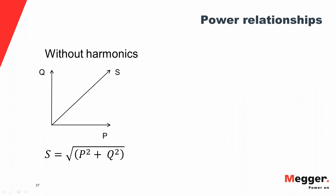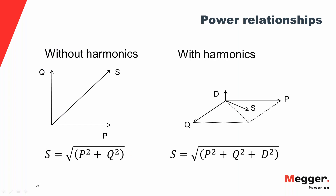In a harmonics-free system, apparent power S, real power P, and reactive power Q have the familiar relationship. But if there are harmonics in the system, there is an additional term D in the equation, changing the relationship between S, P, Q, and D.